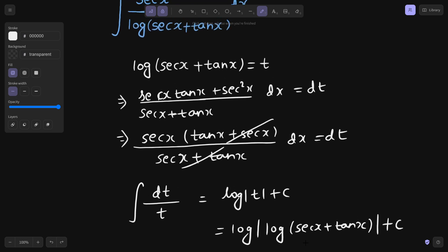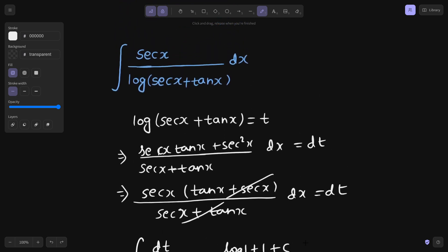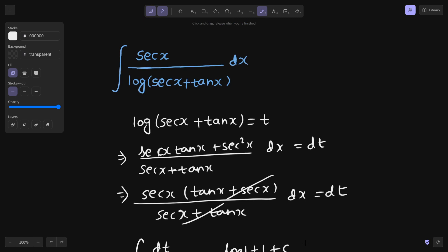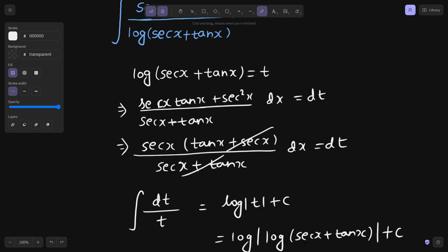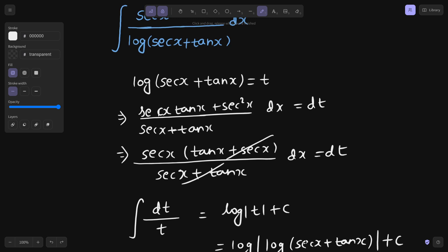So that's it for this problem. Was an easy one once you assume the denominator as t. Rest was just your idea of differentiation. Differentiation because the derivative of secant x is secant x tan x, derivative of tan x is secant square x. Then some simplification that gave us secant x dx equals to dt. Secant x dx was present in numerator and that was replaced by dt. Denominator was replaced by t. Integration of dt by t is nothing but log t. And we back substituted the value of t. And this is our answer.